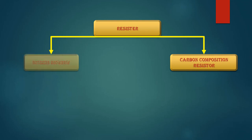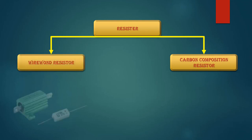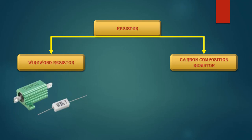The wire wound resistors are large in size. We use this resistor on large circuits, and on circuits which have high voltage and high currents — meaning circuits with high wattage. This wire wound resistor is rated on the basis of wattage.